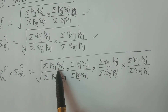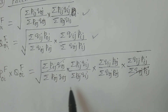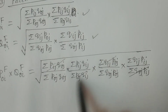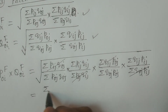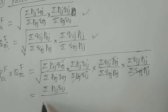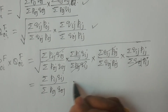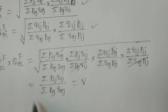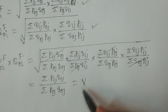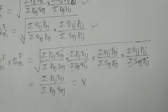Now multiply P₀ᵢ Fisher by Q₀ᵢ Fisher and see which terms cancel. Σ Pᵢⱼ Q₀ⱼ and Σ P₀ⱼ Qᵢⱼ cancel. The remaining values are Σ Pᵢⱼ Qᵢⱼ and Σ P₀ⱼ Q₀ⱼ, which under the square root of a whole square gives Σ Pᵢⱼ Qᵢⱼ / Σ P₀ⱼ Q₀ⱼ. This is the value index number — the true value. Therefore, P₀ᵢ Fisher × Q₀ᵢ Fisher = V (value index number), and Fisher index satisfies the factor reversal test.